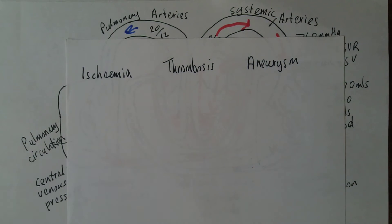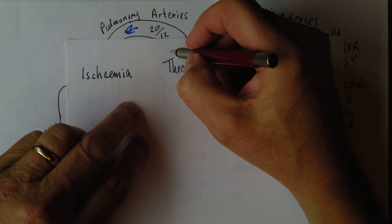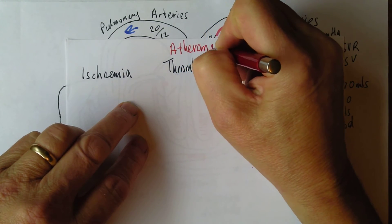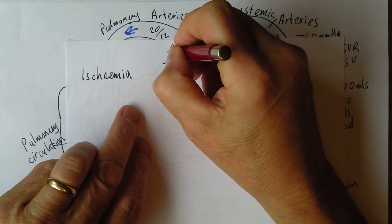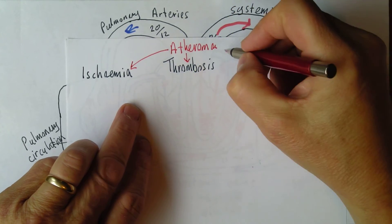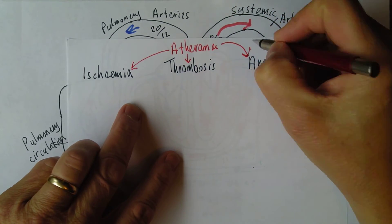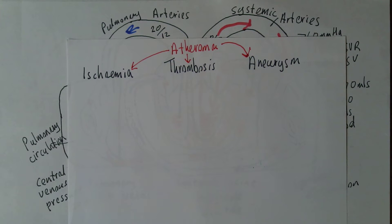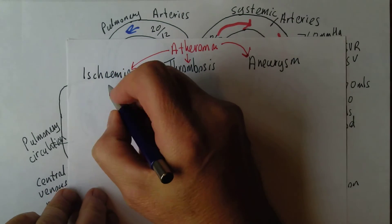Now the ischemia. These are all caused by atheroma, by atherosclerosis. A complication is ischemia, a complication is thrombosis, a complication is aneurysm. These cause a lot of conditions which we are unfortunately only too familiar with. Ischemia can lead to angina.